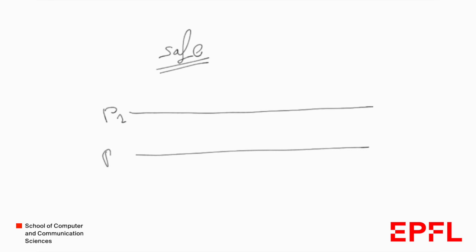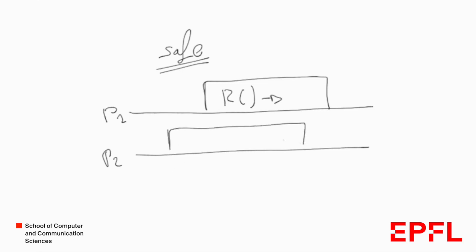So if we have two processes P1 and P2, and process P1 performs a read while at the same time process P2 performs a write — it writes value 53 to the register — then this read by P1 could return any value that is in the range of the register. It could return minus 57, it could return 1032; everything is possible.